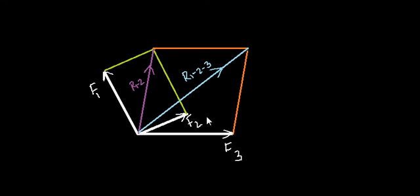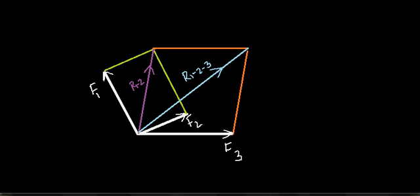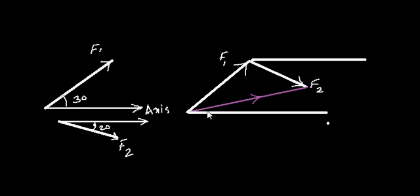Always remember: as long as you maintain the magnitude and direction the same, you can move the vectors anywhere in space. But always make sure you maintain the angles that the vectors make with the reference axis. For example, f1 makes 30 degrees with the x-axis — as long as you maintain that angle, you can move it anywhere. Similarly, f2 makes 20 degrees with the x-axis. Also ensure you maintain the magnitude, or length, of the vectors.